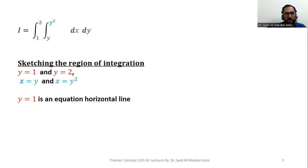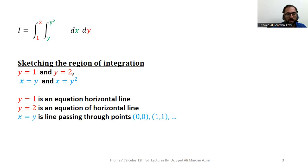y equal to 1 is an equation of a horizontal line which passes through y equal to 1. y equal to 2 is again an equation of a horizontal line which passes through y equal to 2 in the coordinate plane. x equal to y is a line which passes through points like (0,0), (1,1) where you have the same value of x and y in the ordered pairs. And x is equal to y squared is an equation of a parabola.